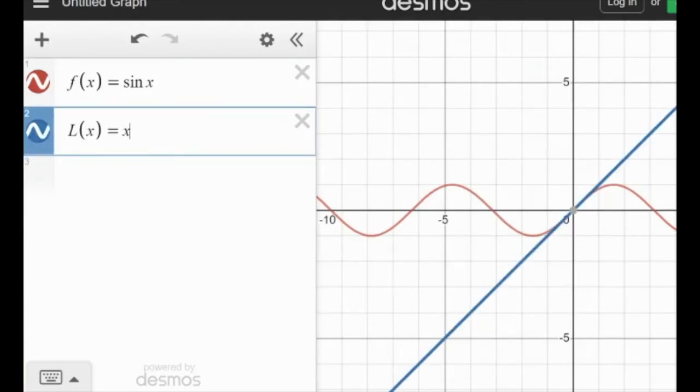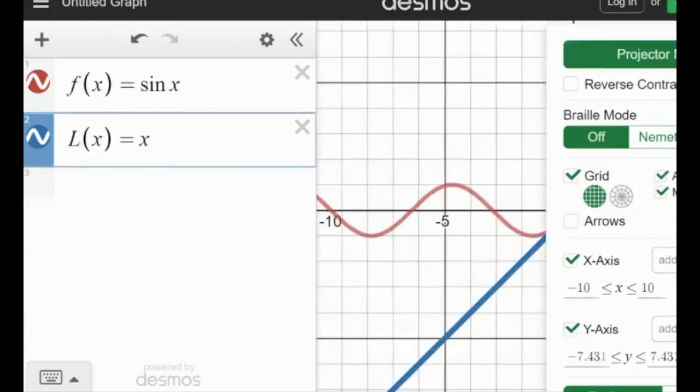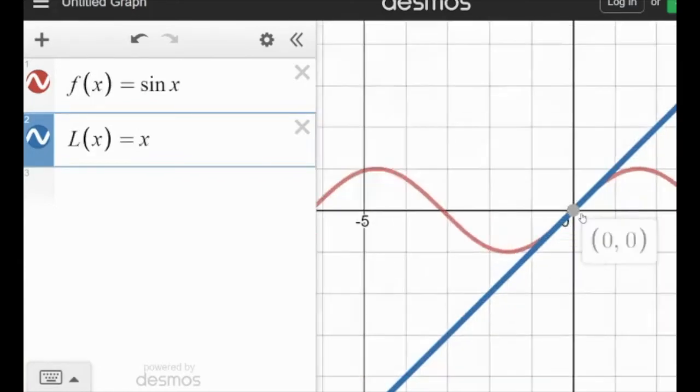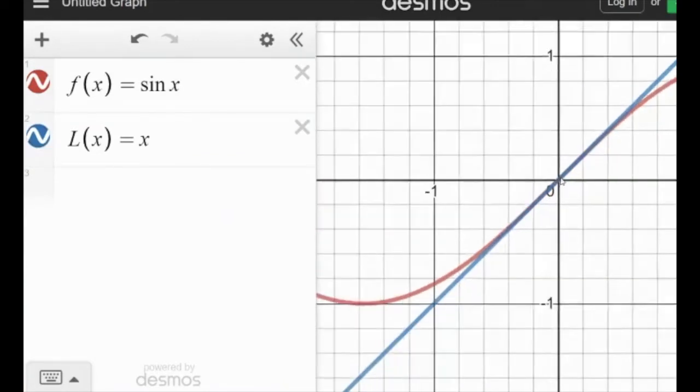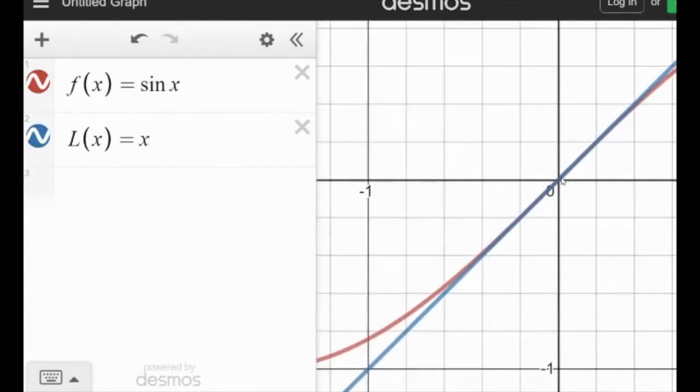Okay, and then I'm going to make the approximation that I had is just x equal to x. Now, watch what happens if I zoom in here, and I'm only zooming in around x equals 0. Okay, so if I zoom in here, you'll notice that around x equals 0, it's pretty much the same line, same values, right?